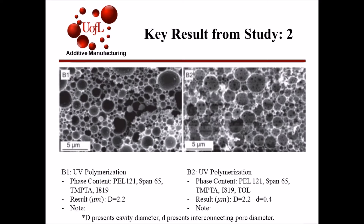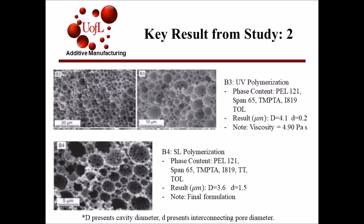The B trials were polymerized using UV radiation to better prepare the formulation for SL printing. B1 replaced the AIBN initiator with the photo-initiator Irgacure 819. B2 added 20% by volume of toluene to the formulation to reduce the viscosity from 12.8 Pa·s to 11.04 Pa·s, since the layer-by-layer process of SL printing can be sensitive to viscosity. B3 increased the volume of toluene to 50% by volume to reduce the viscosity to 4.90 Pa·s. B4 replaced Irgacure 819 with Ivocerine, which better absorbs the LED light source. Tinuvin Carboprotect was added to limit the penetration depth of the light and improve the final resolution. B4 was used as the final formulation.